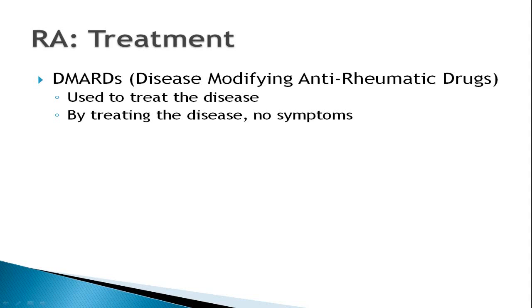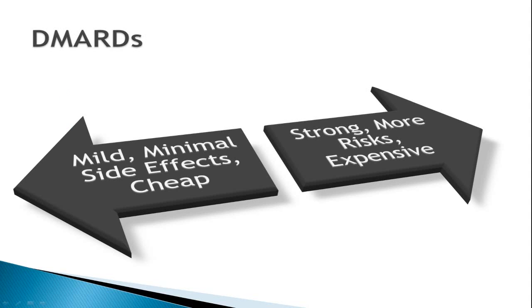DMARDs are used to treat the underlying disease, and by doing so they should lead to no pain, no stiffness, no swelling, functional ability to do what you want to do, and prevention of bone damage. There is a wide spectrum of DMARDs available — ranging from very mild, very safe, and very cheap, to medications that work very well but have a few more risks and can cost upwards of twenty thousand dollars a year. We will sometimes use multiple at a time, working along that spectrum to find the right combination for any given person until we achieve good control of the disease.